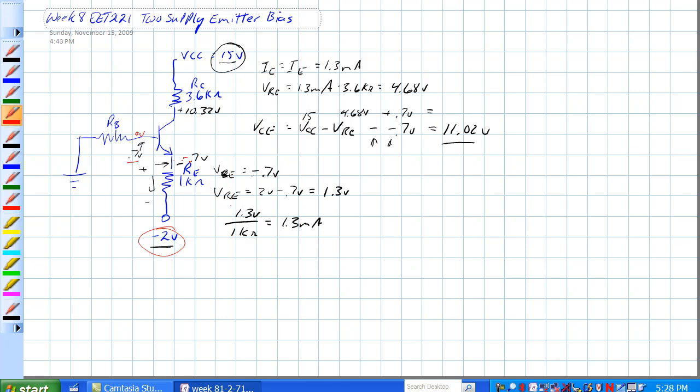Voltage across RE is 2 volts minus 0.7 volts equals 1.3 volt drop from here to here.